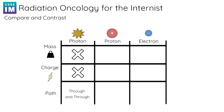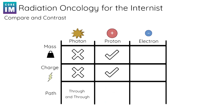Let's recap the key points for protons. Protons have mass and they have charge. And because of this, they start fast but they quickly slow down when they hit tissue, and they stop right at the target.